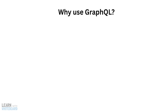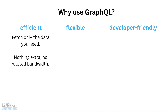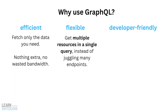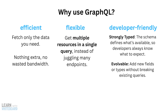Why even use GraphQL? GraphQL is popular because it's efficient, flexible, and developer-friendly. Efficient — it fetches only the data you need, nothing extra, no wasted bandwidth. Flexible — you can get multiple resources in a single query instead of juggling many endpoints. Developer-friendly because it's strongly typed, meaning the schema defines what's available so developers always know what to expect. And it's evolvable — you can add new fields or types without breaking existing queries.